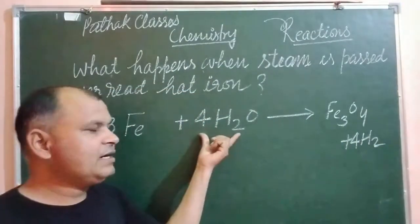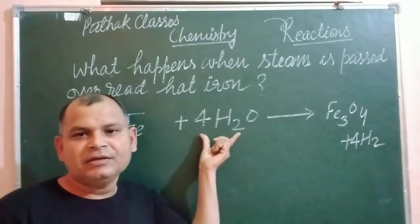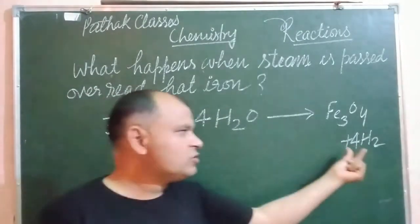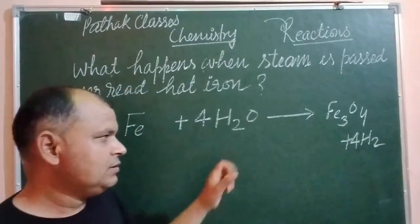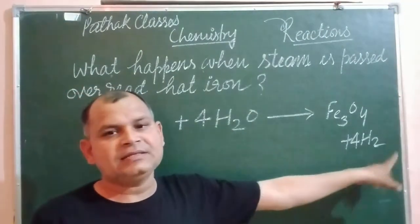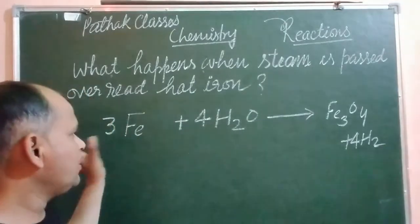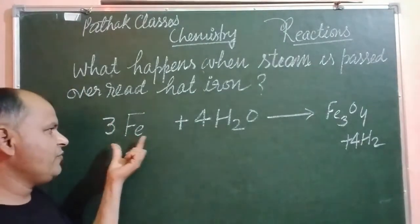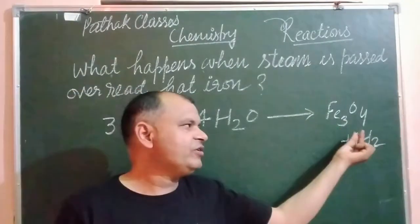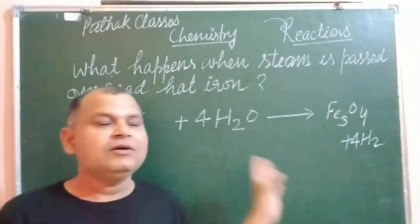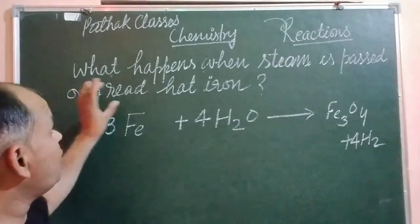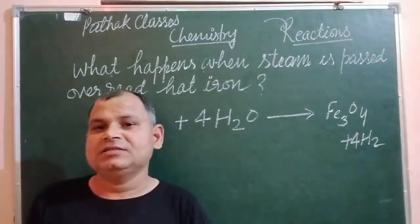So there are 8 oxygen atoms and 4 hydrogen molecules. So the reaction is 3 Fe plus 4 H2O equals Fe3O4 plus 4 H2. So student, this is the reaction where red hot iron reacts with steam.